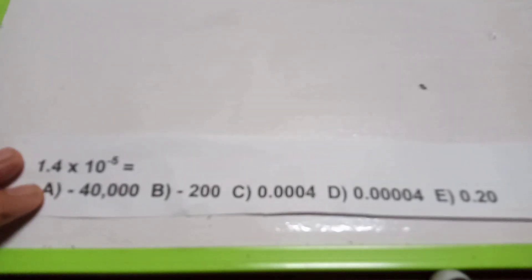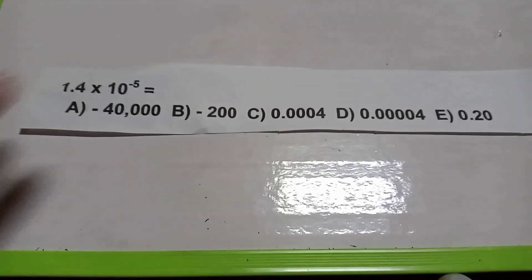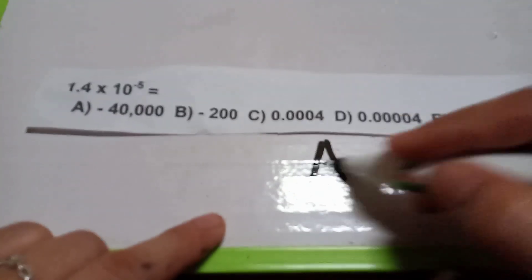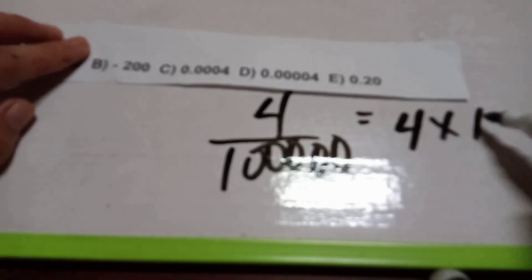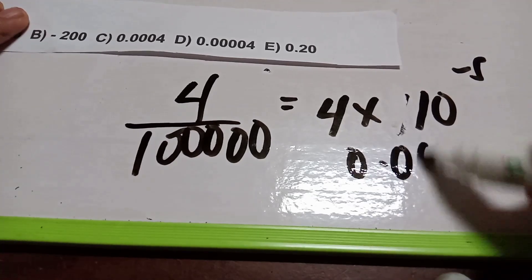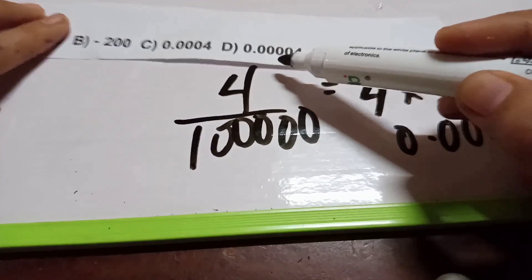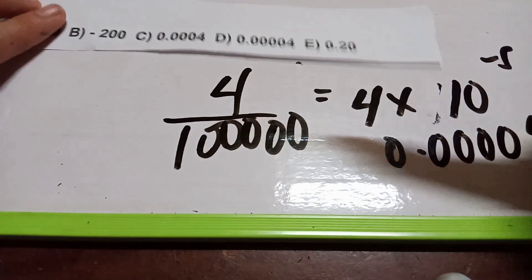Problem number one: 4 times 10 to the negative 5. The choices are: a) negative 40,000, b) 200, c) 0.04, d) 0.00004, and e) 0.20. We know this uses the formula a times 10 to the b power, where a is the constant and b is the power. Four times 10 to the negative 5 equals 0.00004 — you count one, two, three, four, five decimal places.